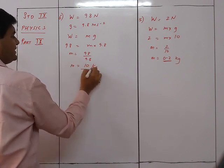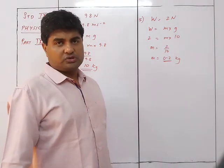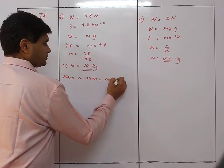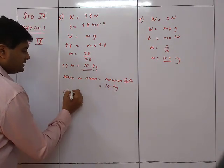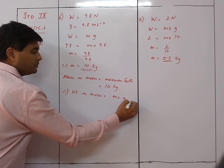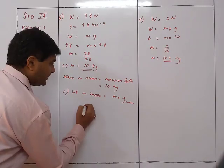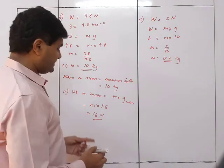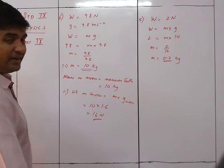Mass is 10 kg. Mass remains the same whether on moon or earth, so mass on moon = mass on earth = 10 kg. For weight on moon: W = m·g_moon = 10 × 1.6 = 16 newton. So a body that weighed 98 newton on earth weighs only 16 newton on the moon.